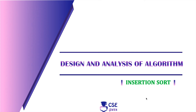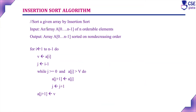Welcome to CSE Guru. In this session we will discuss insertion sort algorithm with example and we will trace the logic. This is the algorithm to implement insertion sort — sort a given array by using insertion sort technique. The input is an array from index 0 to n minus 1 of n orderable elements. The output is array A of 0 to n minus 1 sorted in non-decreasing order. Here we are using a for loop.